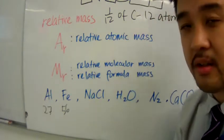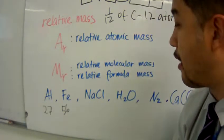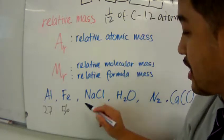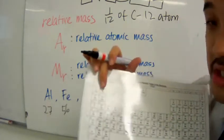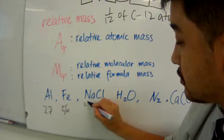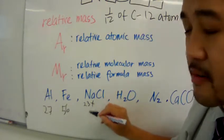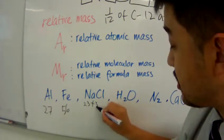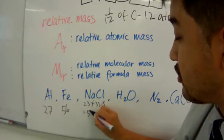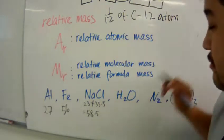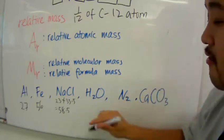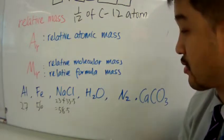So for NaCl, what is the relative formula mass? Well, take the mass of Na, which is twenty-three, plus the mass of chlorine, which is thirty-five point five, which gives you fifty-eight point five. That is the relative mass of sodium chloride.